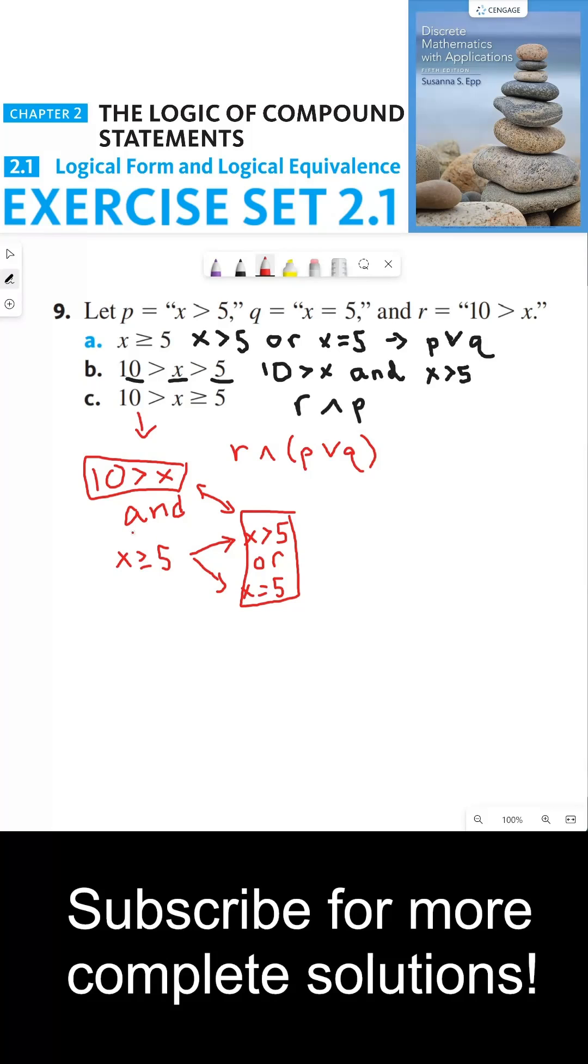So the and operation is external to this or operation. This and operation applies to the molecular statement itself. And so if you had written this as r and p or q, this would be incorrect...